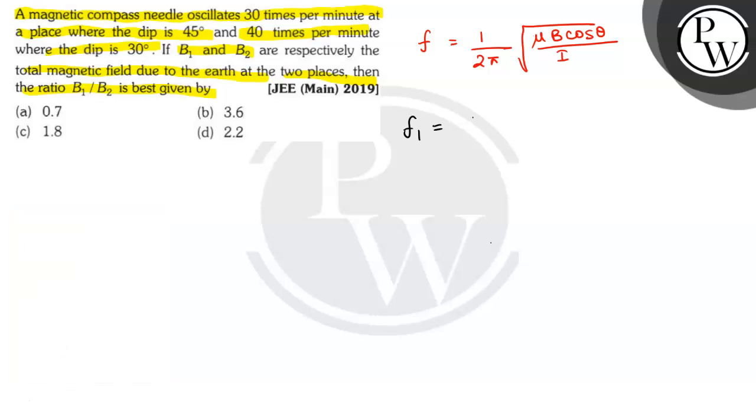Then F1 is given by 1 by 2 pi root under mu B1 cos 45 by I, which equals 30 times per minute.